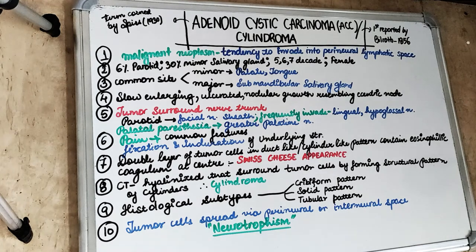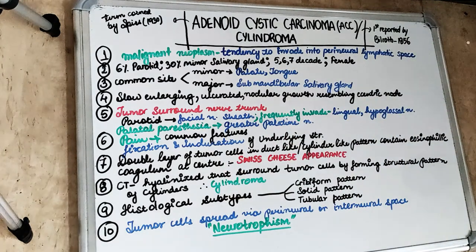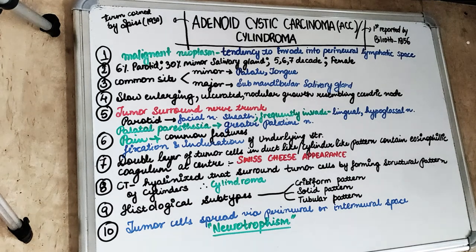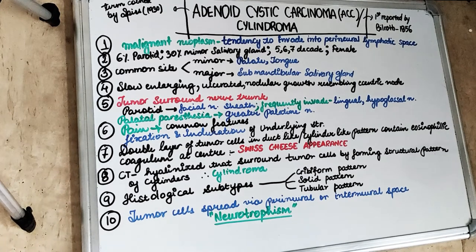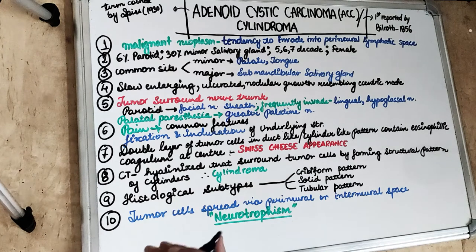This is a malignant tumor — majorly of the minor salivary gland. Till now we have covered the benign neoplasms: one was the pleomorphic adenoma, the benign mixed salivary gland tumor, and then we had the adenolymphoma or Warthin's tumor, which was majorly a benign parotid gland tumor. Now we are talking about Adenoid Cystic Carcinoma, which is a malignant neoplasm.